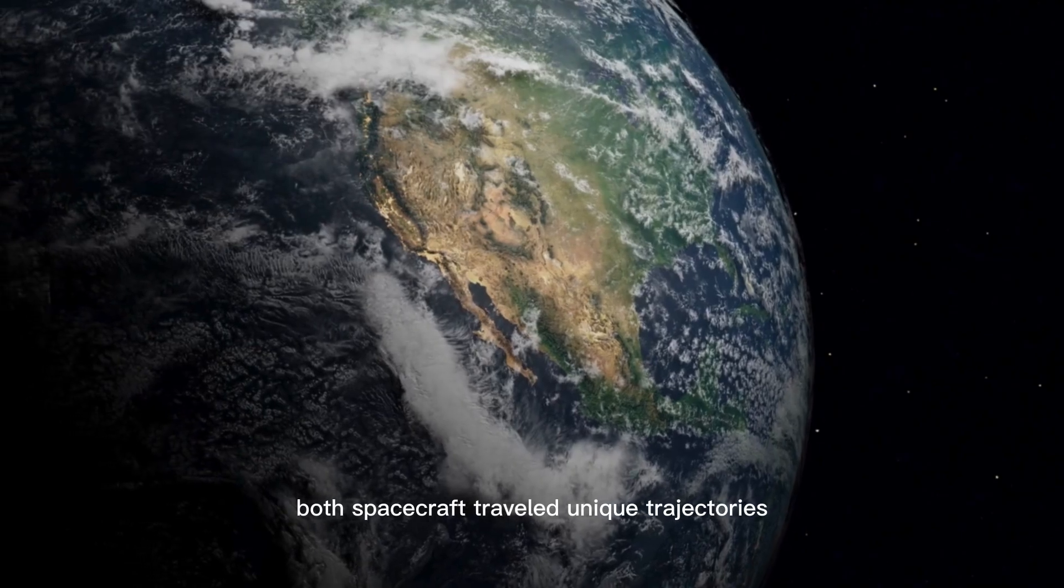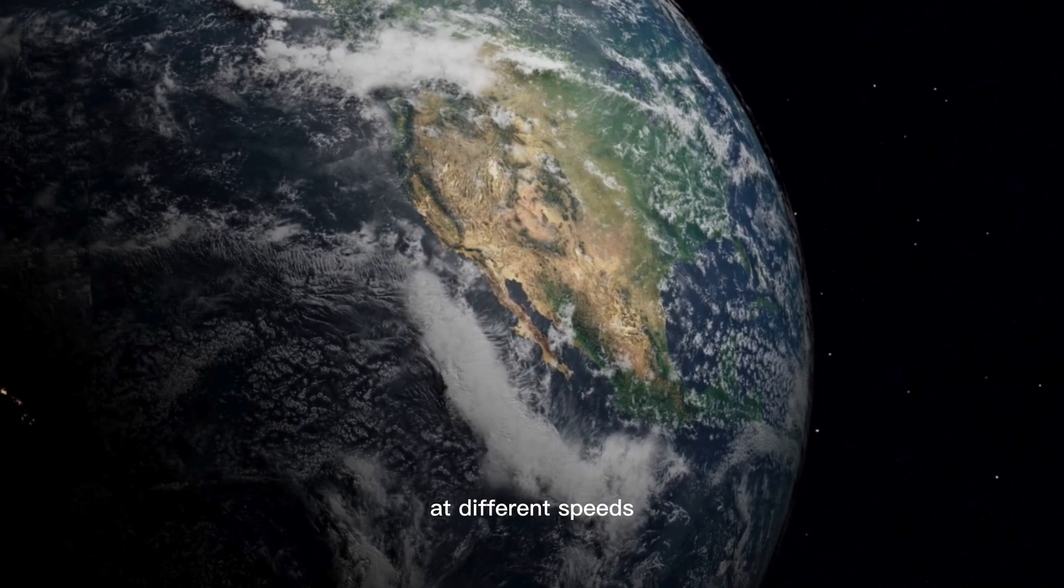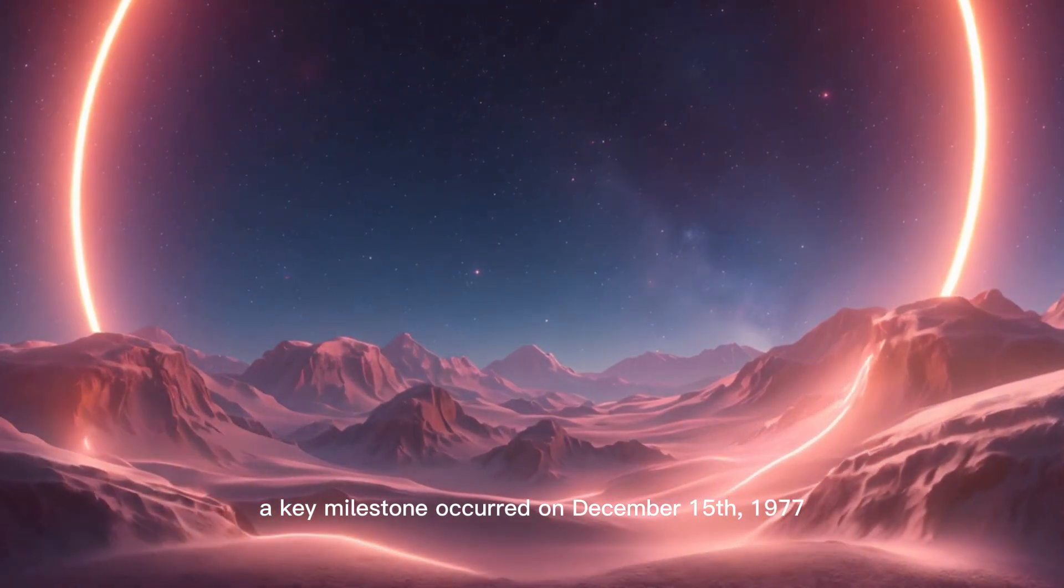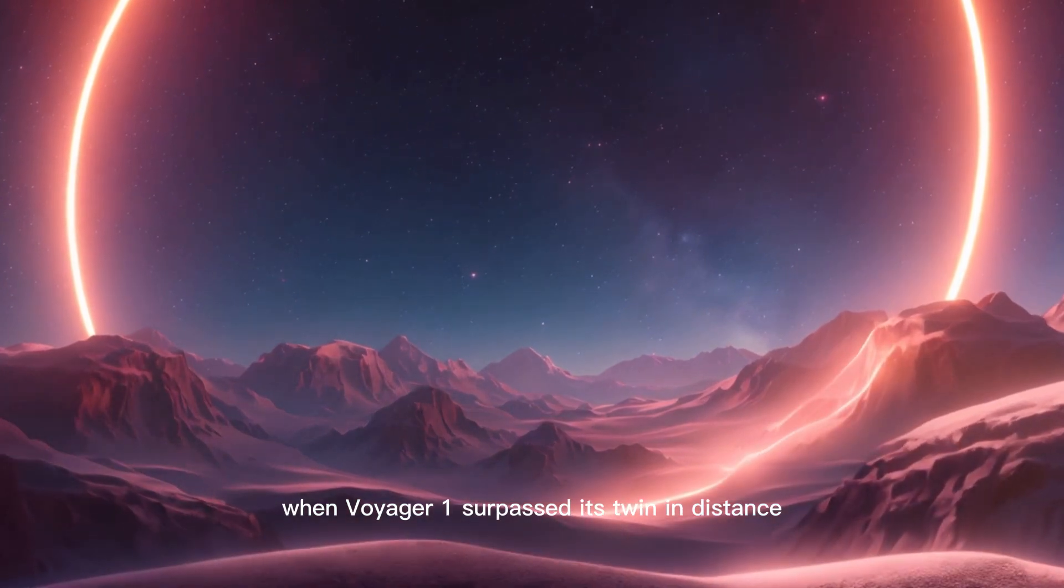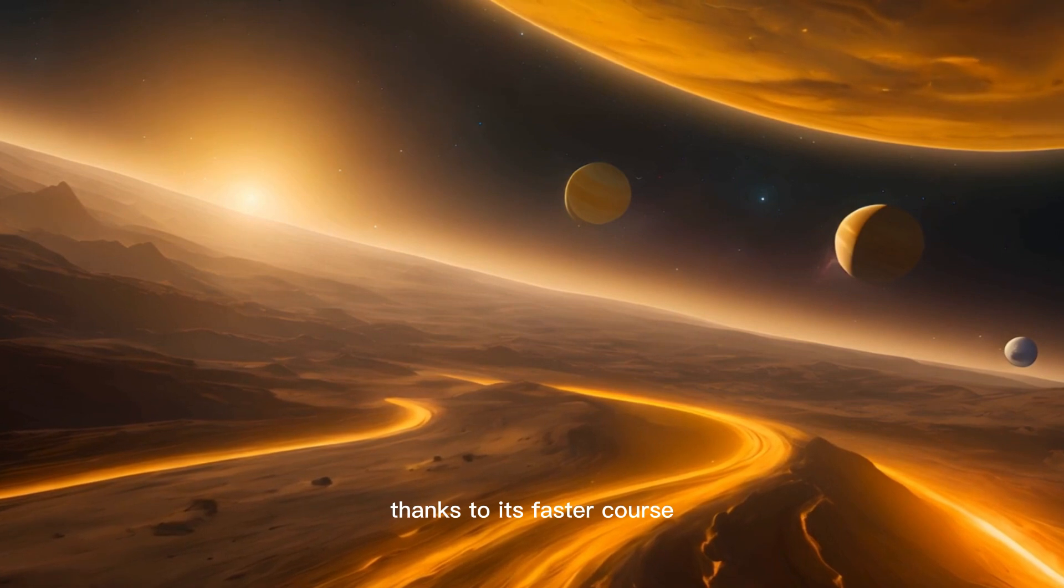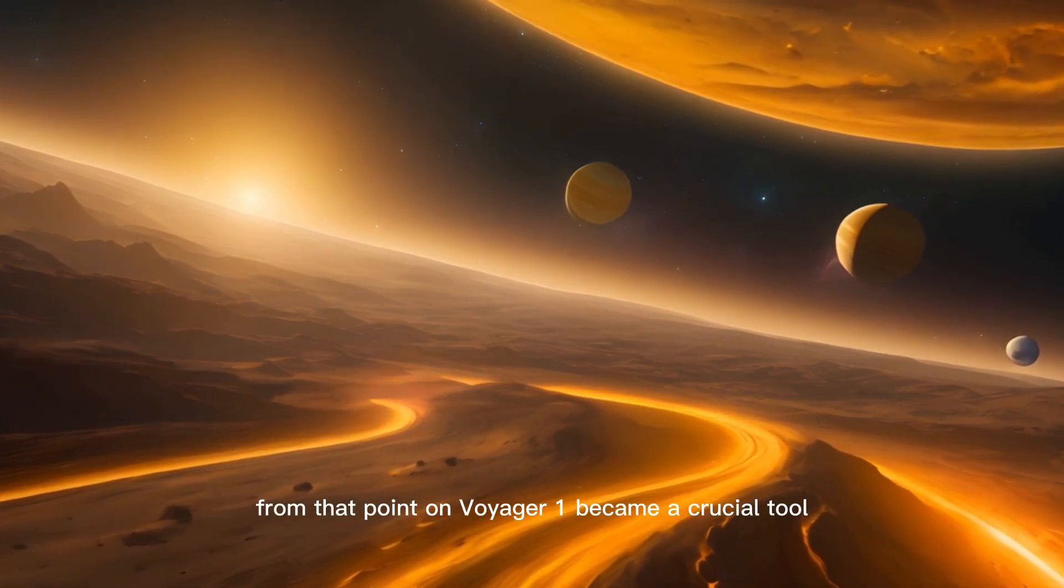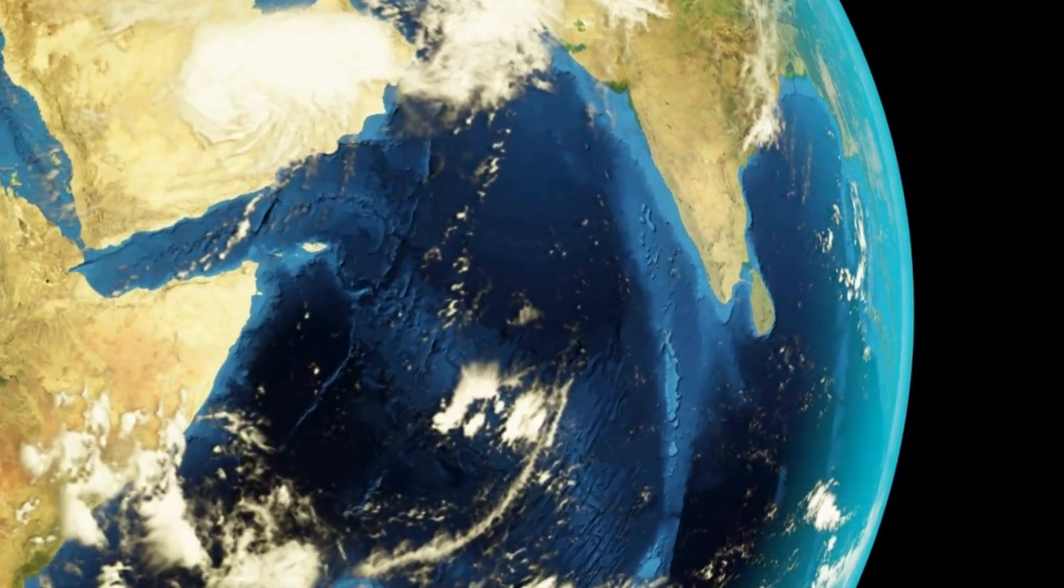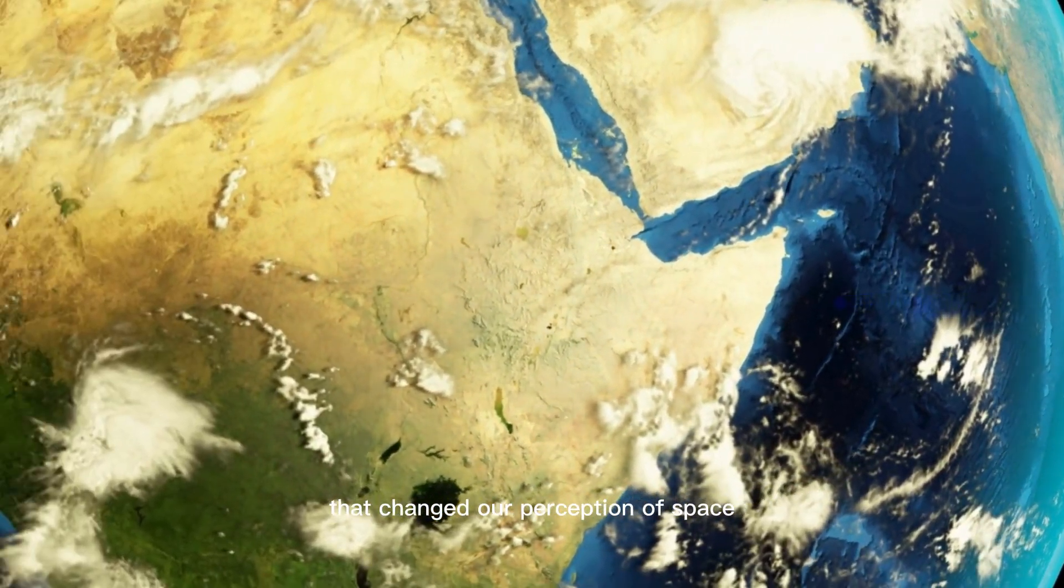Weighing around 721 kilograms, similar to a small car, both spacecraft traveled unique trajectories at different speeds. A key milestone occurred on December 15, 1977, when Voyager 1 surpassed its twin in distance, thanks to its faster course. From that point on, Voyager 1 became a crucial tool in unveiling the mysteries of the universe.